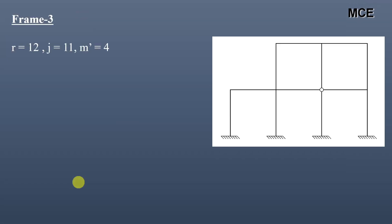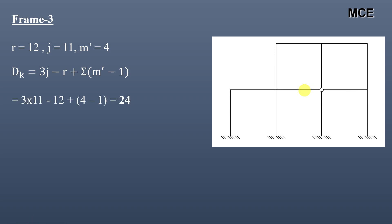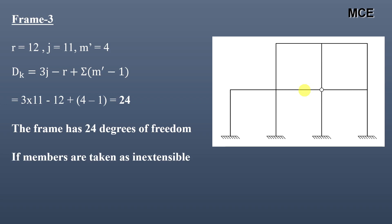For frame 3, this frame has 12 reactions, 11 joints, and 1 internal hinge. The number of members meeting at this internal hinge is 4, so m′ = 4. The value of DK is equal to 24, meaning this frame has 24 degrees of freedom. If members are taken as inextensible, this frame has 12 members, so DK = 24 − 12 = 12.